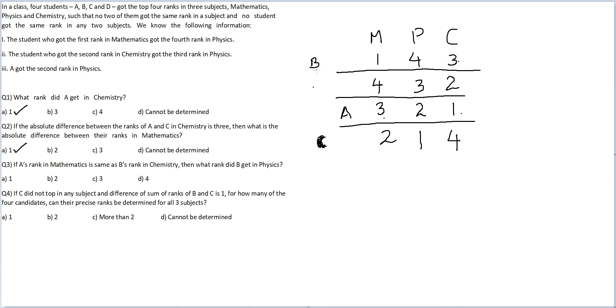So this is B for this question. Question number three. B is here. Then what rank did B get in Physics? In Physics, what rank did B get? He got rank four. Therefore, answer option D.